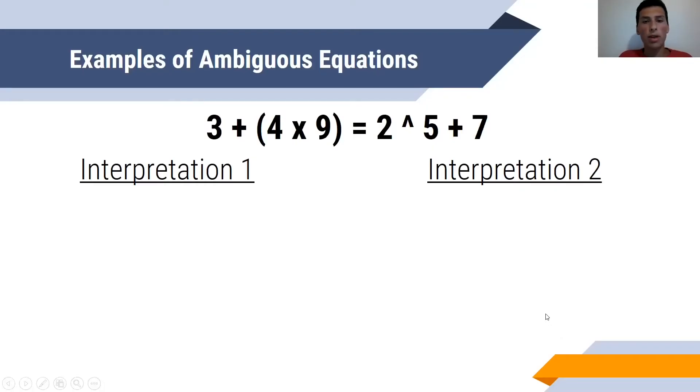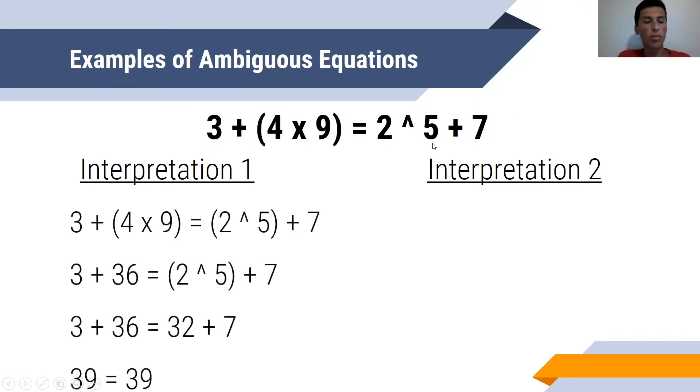Here's an example of another ambiguous equation: 3 plus in parentheses 4 times 9 equals 2 to the power of 5 plus 7. You might be looking at the solution and saying, oh that's okay, there's parentheses there, but the goal side doesn't have parentheses. So one interpretation would be 3 plus in parentheses 4 times 9 equals in parentheses 2 to the power of 5 plus 7. So that's 3 plus 36 equals 2 to the power of 5 plus 7, and that simplifies to 3 plus 36 equals 32 plus 7, and that's just 39 equals 39, so that checks out.